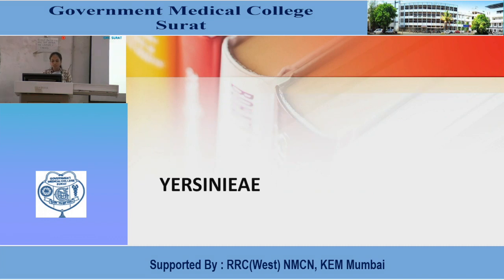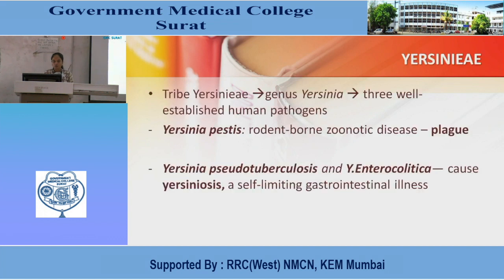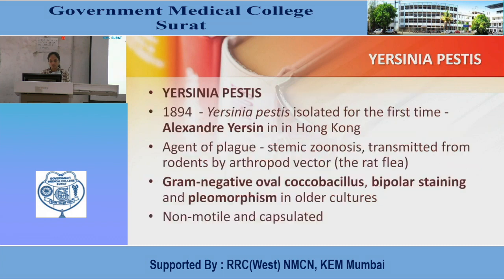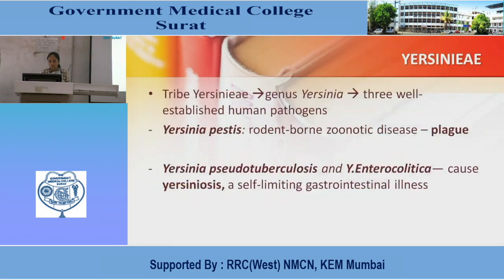We will see about Yersinia first. The tribe of Yersinia is Yersiniae, genus is Yersinia. There are three well-established human pathogens: Yersinia pestis, Yersinia pseudotuberculosis, and Yersinia enterocolitica. Yersinia pestis causes a rodent-borne zoonotic disease called plague. Yersinia pseudotuberculosis and Yersinia enterocolitica cause Yersiniosis, a self-limiting gastrointestinal illness.